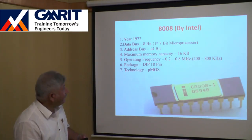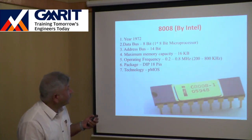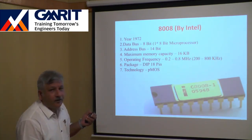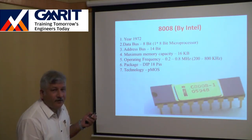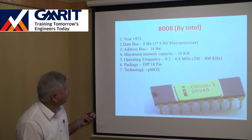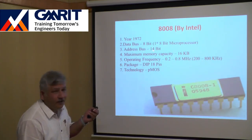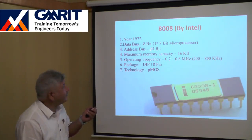For the 8008, the data bus was doubled from 4-bit (as in the 4004) to 8-bit. The address bus was also increased from 10-bit to 14-bit. Increasing the address bus directly increases the maximum memory capacity that can be attached to the processor.